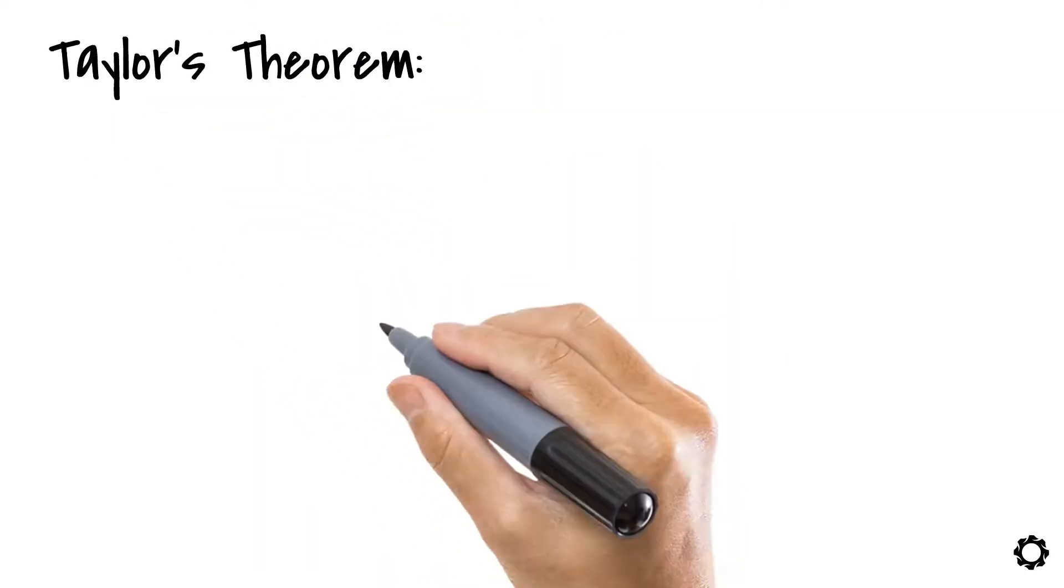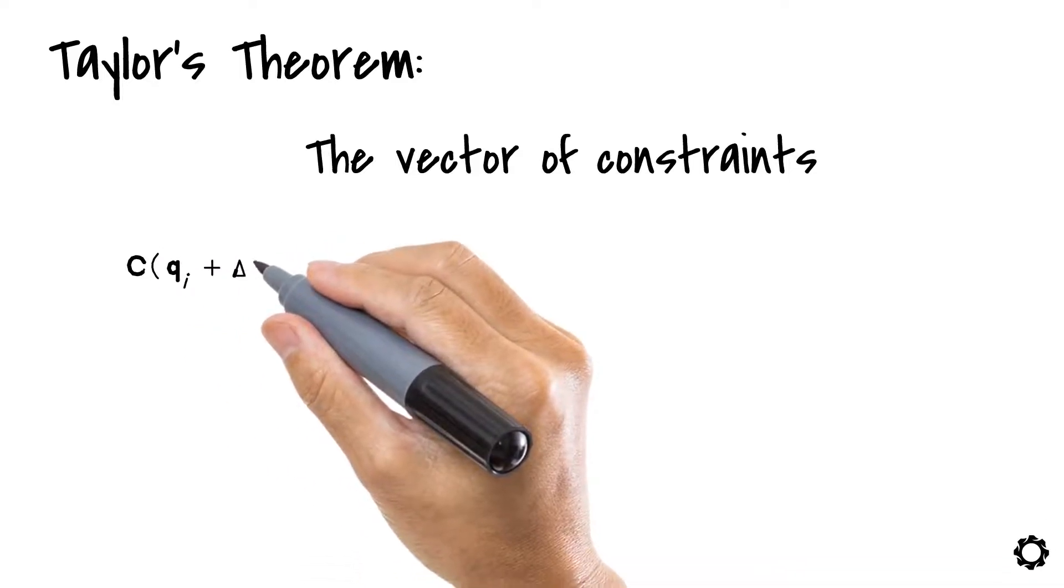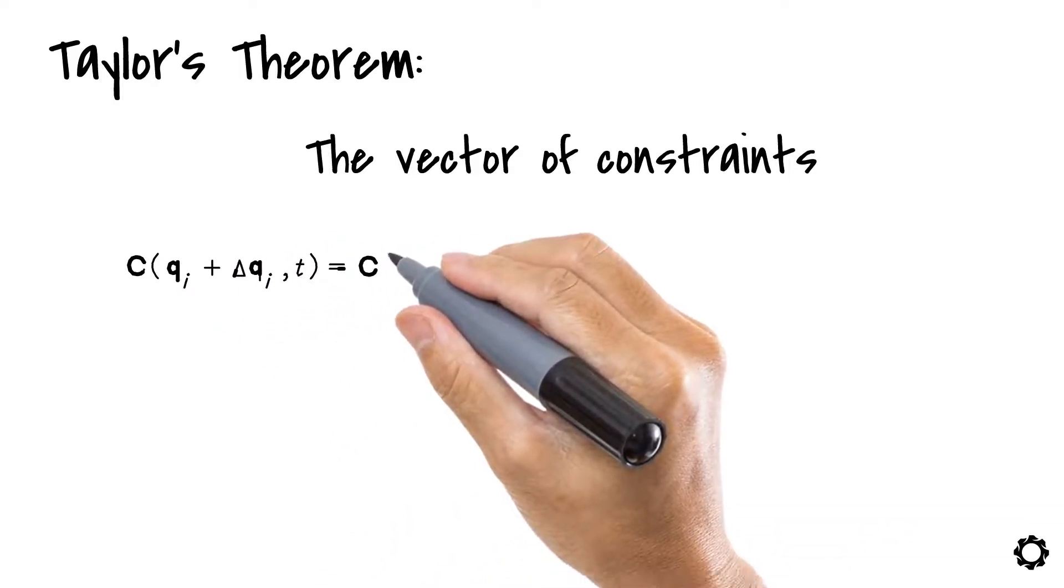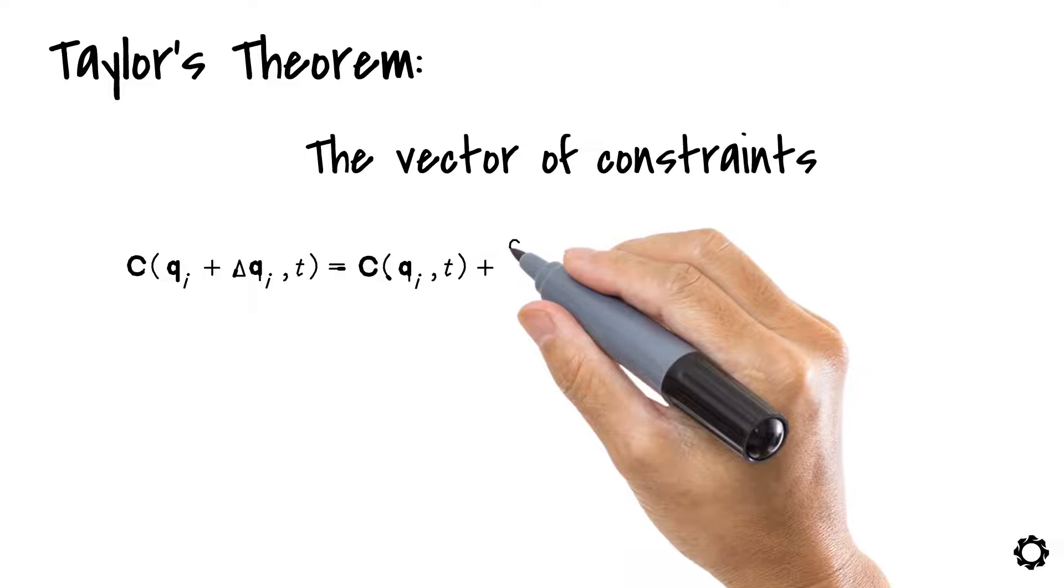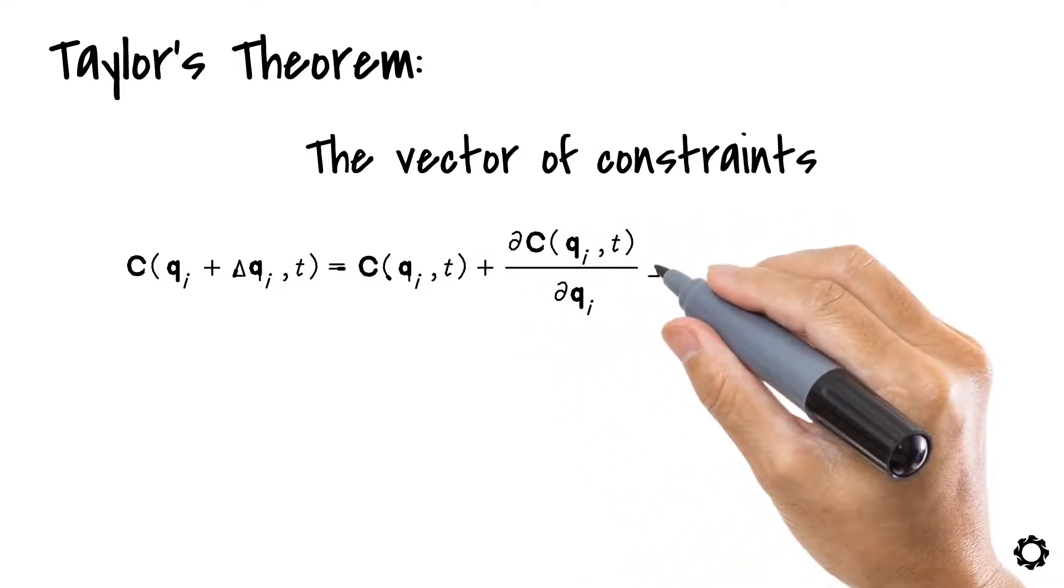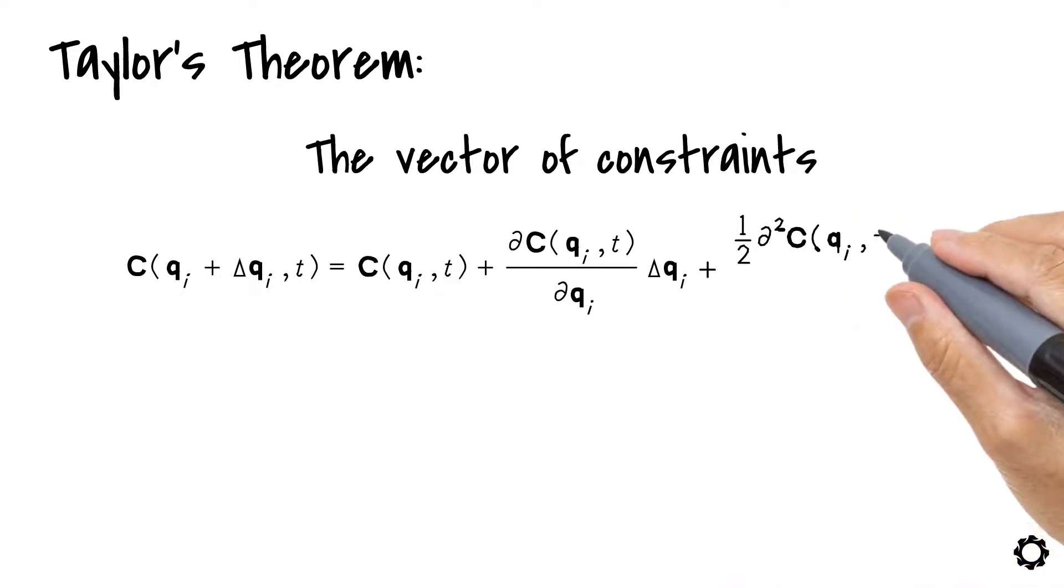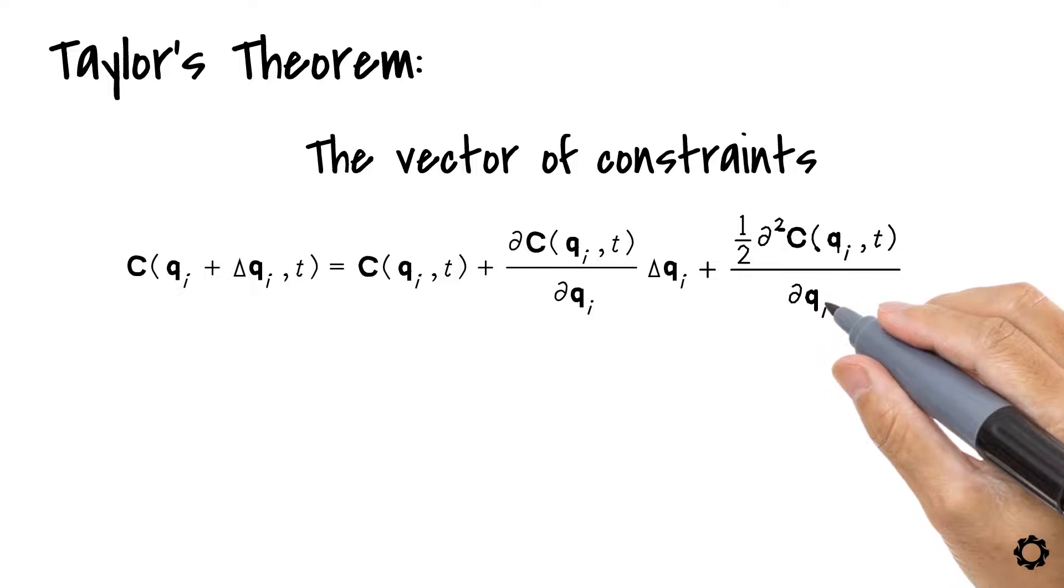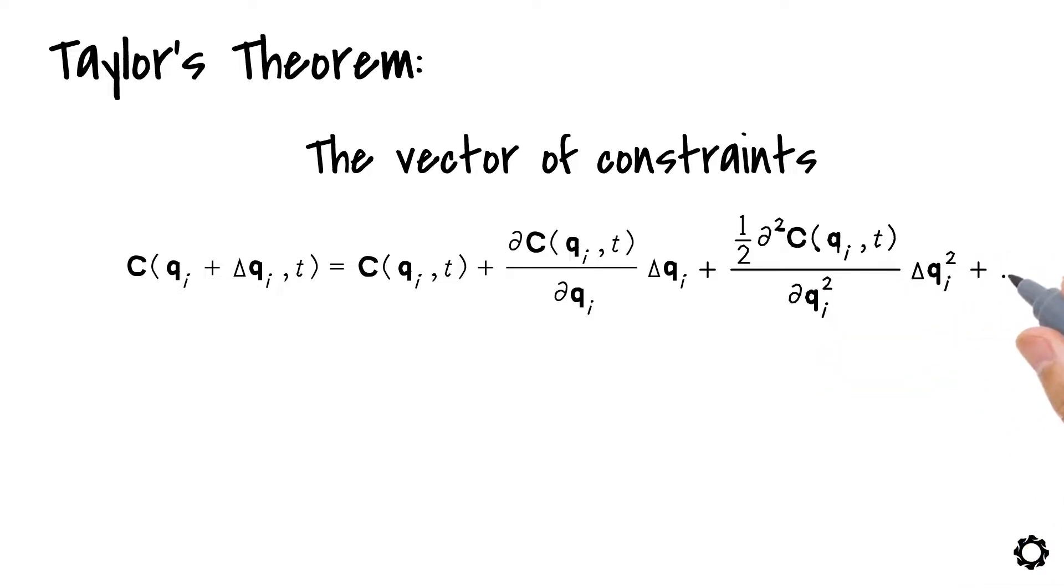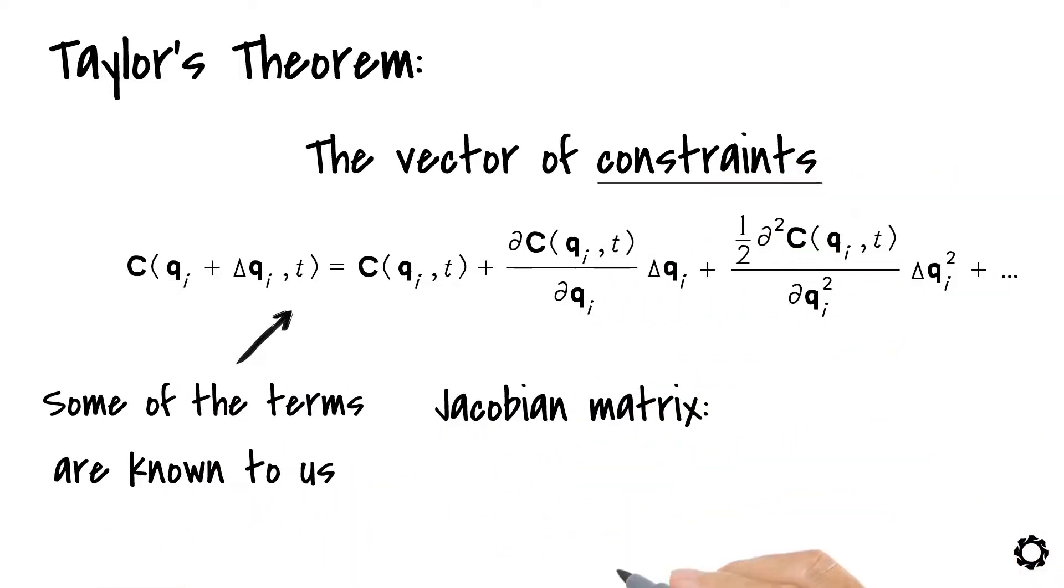Using Taylor's theorem, the vector of constraints can be written as C(qi + delta qi, t) equals C(qi, t) plus ∂C(qi, t)/∂qi times delta qi plus 1/2 ∂²C(qi, t)/∂qi² times delta qi squared and so on. Some of the terms of this Taylor's polynomial are known to us, like the Jacobian matrix of the constraints C_qi. Let's change them to this known format.